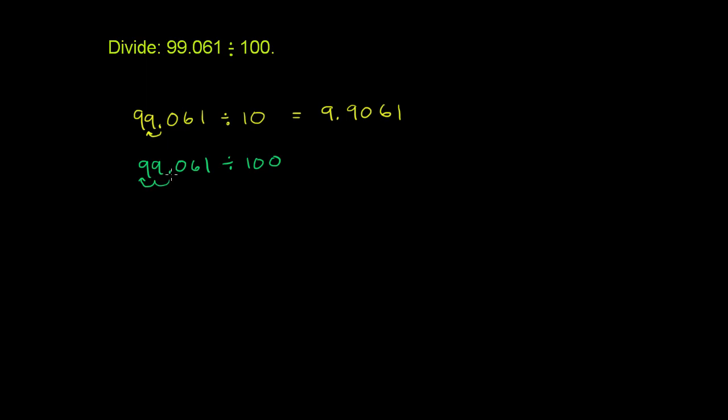If you move the decimal place two places to the left, because we're dividing by 10 twice, we get the decimal in front of the 99: 0.99061. We should put a 0 out front, as it clarifies things.